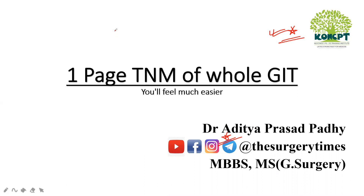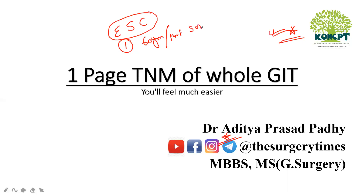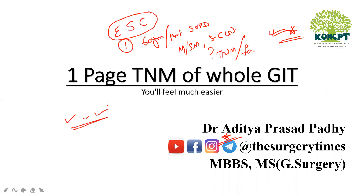Today's topic is one-page TNM of the whole GIT. We will study about esophagus, stomach, and colorectal carcinoma — a very, very important topic. Nowadays clinical questions are asked like: a 60-year-old male with history of partial gastrointestinal surgery came to your OPD with a biopsy report showing tumor infiltrating to the mucosa or submucosa with 5 to 6 lymph node involvement. So what is the TNM staging for this case? It is very, very important, and in one page only we will remember comparatively. Please see the video two to three times.